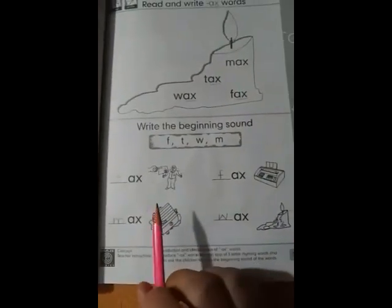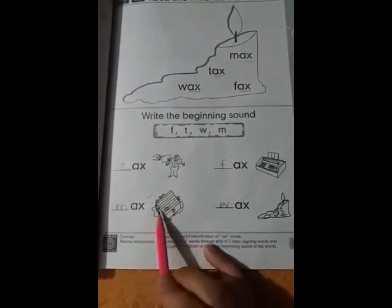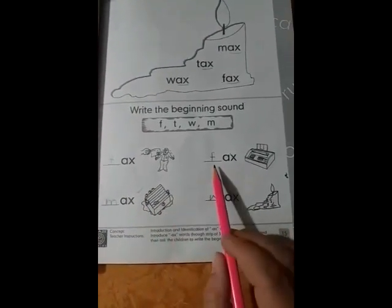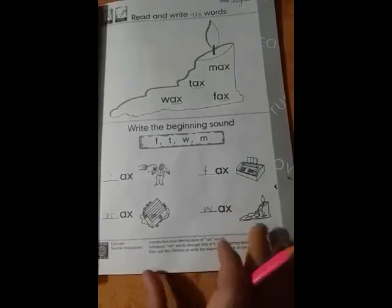And the third picture is max, ax, max is like walking stick, stick with a line across. X, fax. And the last picture is wax, wax and the beginning sound is W, is like two victories. Wax, wax. Now we repeat again. T ax, tax, M ax, max, X, fax, W ax, wax. Okay, now turn the page.